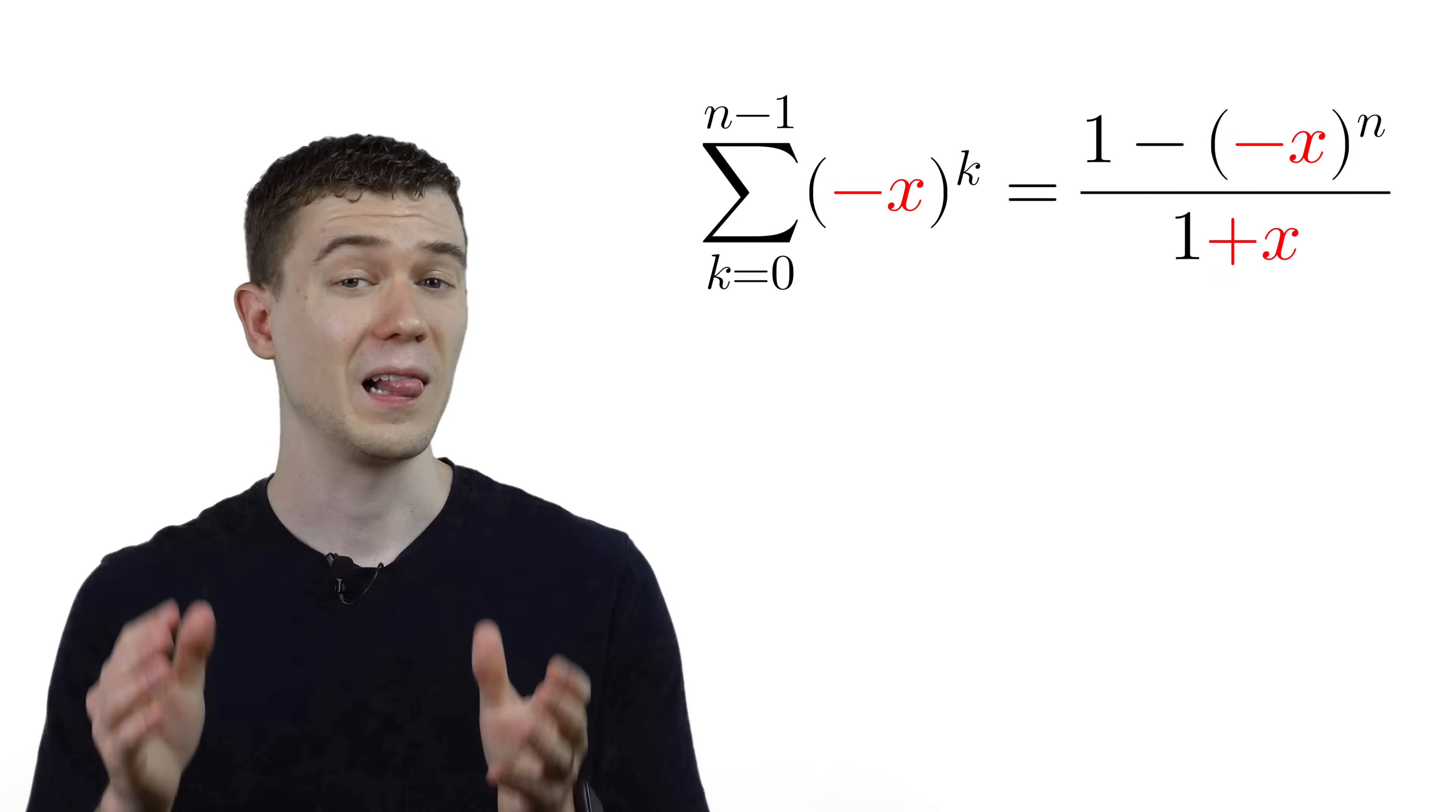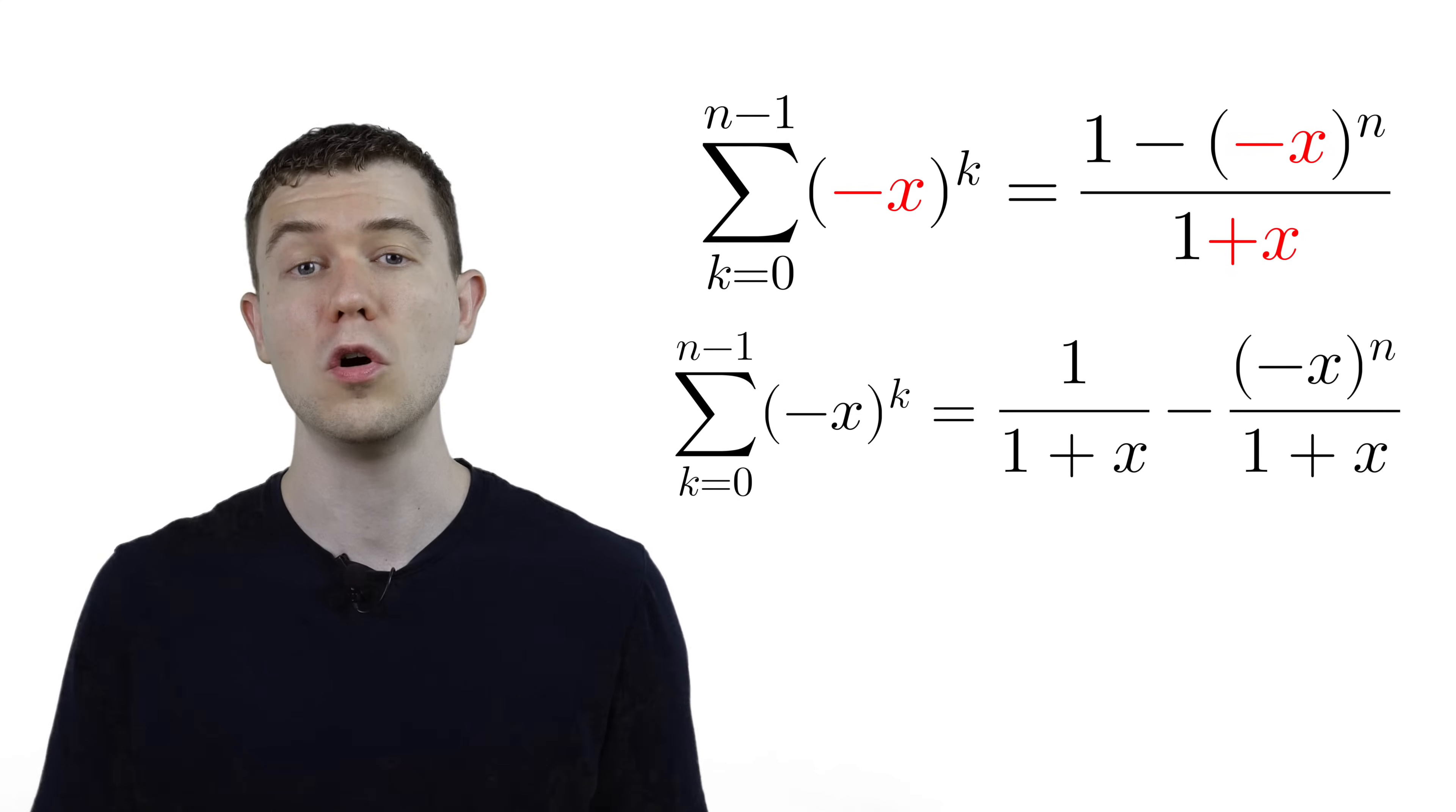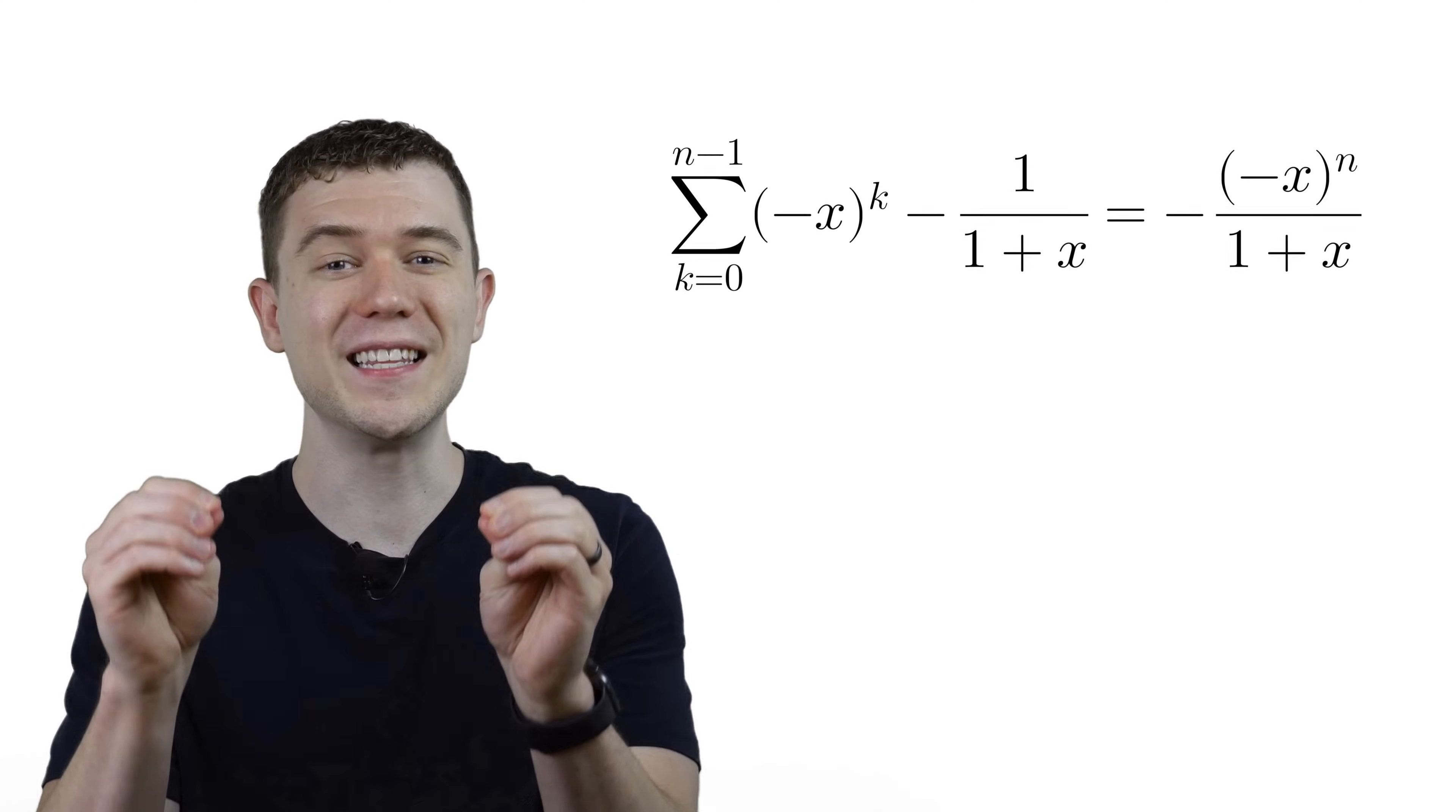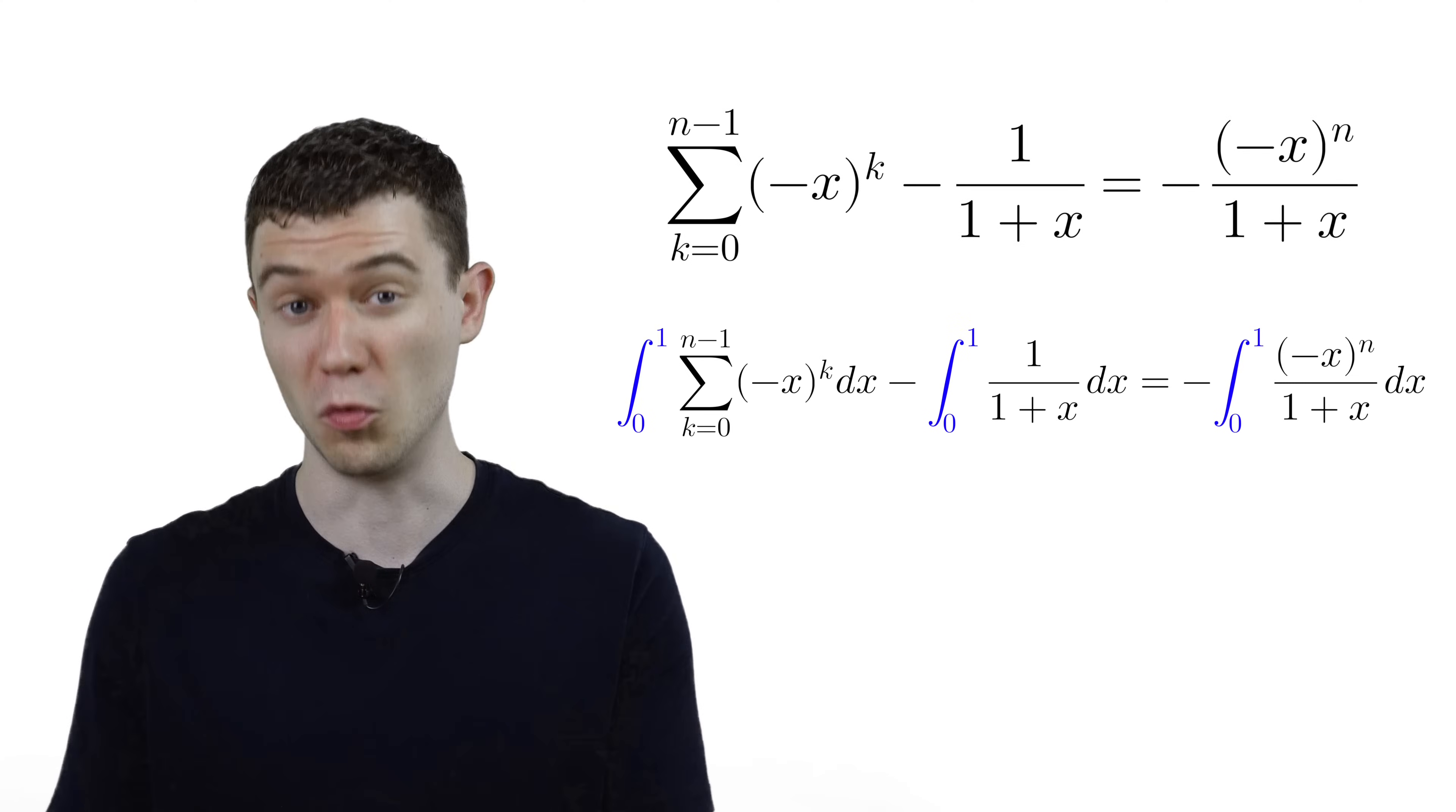but let's plug in negative x to get this result. Let's split up this fraction and subtract the 1 over 1 plus x to the other side. I hope you're ready for some calculus because we are going to take the definite integral of both sides of this equation from 0 to 1.